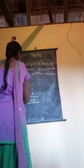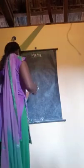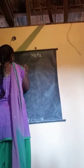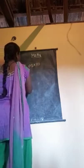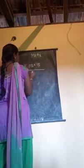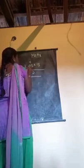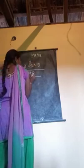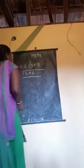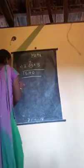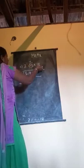Next example: 3.08 multiplied by 5. As it is: 5 times 8 is 40 — write 0 carry 4; 5 times 0 is 0 plus 4 is 4; 5 times 3 is 15. Now count decimal digits: 3.08 has 2 decimal digits, 5 has 0, total is 2 — so we place the decimal point 2 digits from the right. Answer: 15.40.